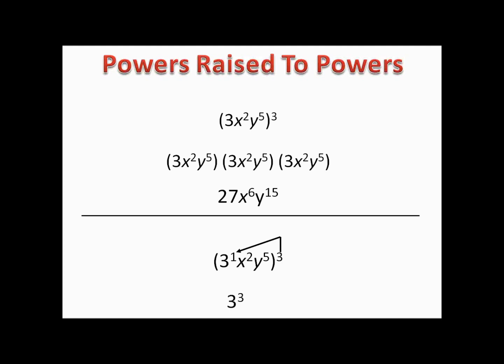Now let's distribute it to the x: x squared has an exponent of 2, and 2 times 3 is 6, giving us x to the sixth. Distributing to the y: 5 times 3 is 15, so we have y to the 15th. And 3 to the third is 27, so we end up with 27x⁶y¹⁵ without having to write everything out.